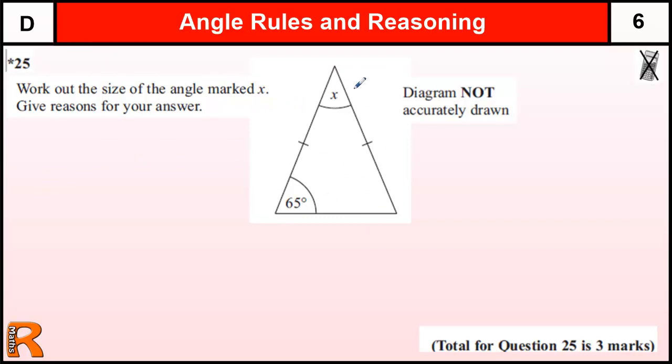Work out the size of the angle marked X. Well, we've got a triangle here. We should be noticing that these lines on here tell us that these two sides are the same and therefore the triangle is isosceles.